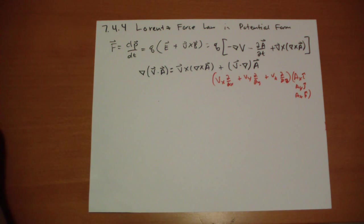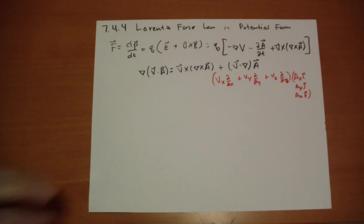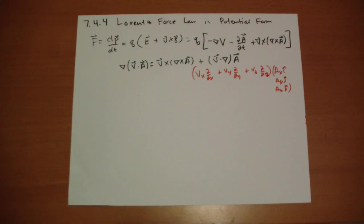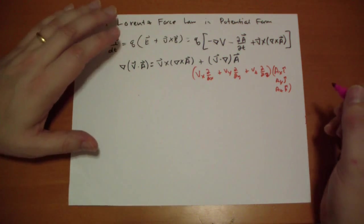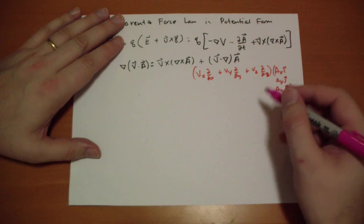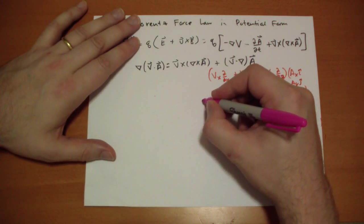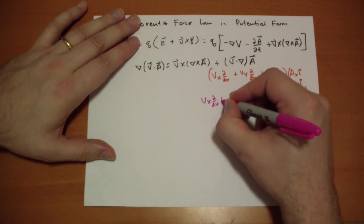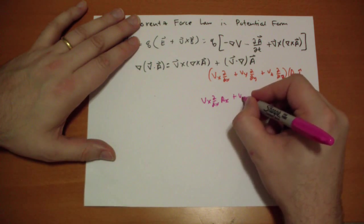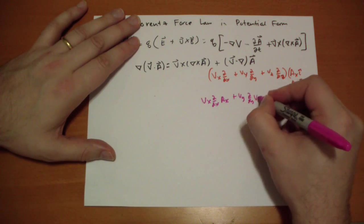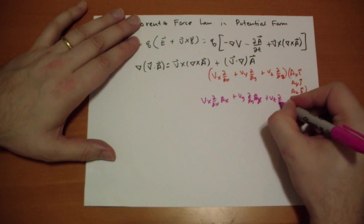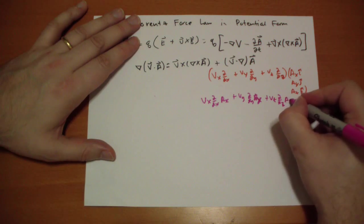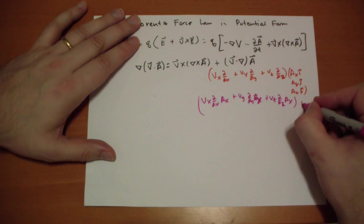I'm going to write it out in full. It's important because there are concepts here you probably want to understand. I've seen people go berserk over this when it really isn't that complicated — it's just long. So we have Vx d/dx Ax + Vy d/dy Ax + Vz d/dz Ax, all in the î direction.